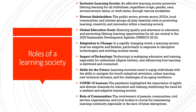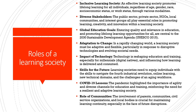What are the roles of a learning society? First is inclusive learning society — an effective learning society promotes lifelong learning for all individuals regardless of age, gender, race, socio-economic status, or work status. There are diverse stakeholders involved including not just the public sector but also the private sector including NGOs, local communities, and various interest groups who all play essential roles in promoting learning, creativity, and innovation. The role of a learning society is also to meet global education goals, ensuring quality and relevance in education, and promoting lifelong learning opportunities which are central to the sustainable development goal agenda. A learning society should also be adaptable to change, being adaptive and flexible particularly in response to disruptive technologies and evolving societal needs.